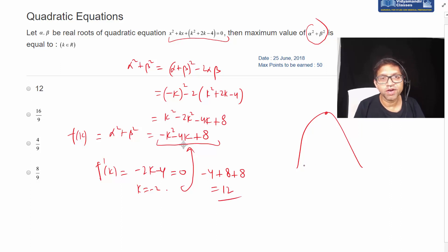So this is how you can find 12 as the answer. Or you can apply minus d by 4a, minus discriminant of this quadratic. Discriminant is b square minus 4ac, 16, and then plus 32, divided by 4 times a, which is minus 1.